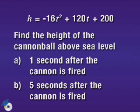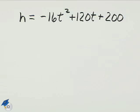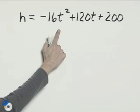For Part A, we need to find the value of h one second after the cannon is fired, so t will equal 1.